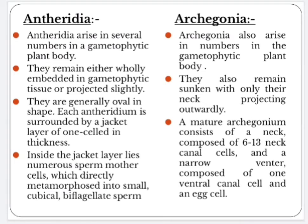Antheridia arise in several numbers in the gametophytic plant body. They remain either fully embedded in gametophytic tissue or projected slightly. They are generally oval in shape. Each antheridium is surrounded by a jacket layer one cell in thickness. Inside the jacket layer lie numerous sperm mother cells which directly metamorphose into small cubical biflagellate sperms. Archegonia also arise in numbers in the gametophytic plant body; they remain sunken with only their neck projected outwardly. A mature archegonium consists of a neck composed of 6 to 13 neck canal cells and a narrow venter composed of a ventral canal cell and an egg cell.